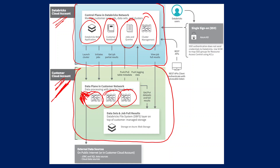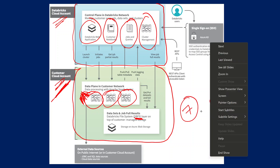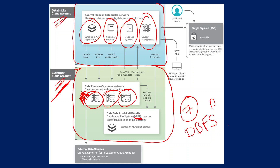In the data plane you also have something called the Databricks File System (DBFS). In our past videos — the seventh video — we uploaded one file into DBFS and tried to read the data from that storage. DBFS is like your Databricks account's own personal storage. In the backend, what actually happens is that it is an Azure Blob Storage; within your own Azure account it creates one Azure Blob Storage, and on top of that blob storage it creates a layer called the Databricks File System. Think of DBFS as the Databricks account's own storage layer where you can upload data and use it for processing.